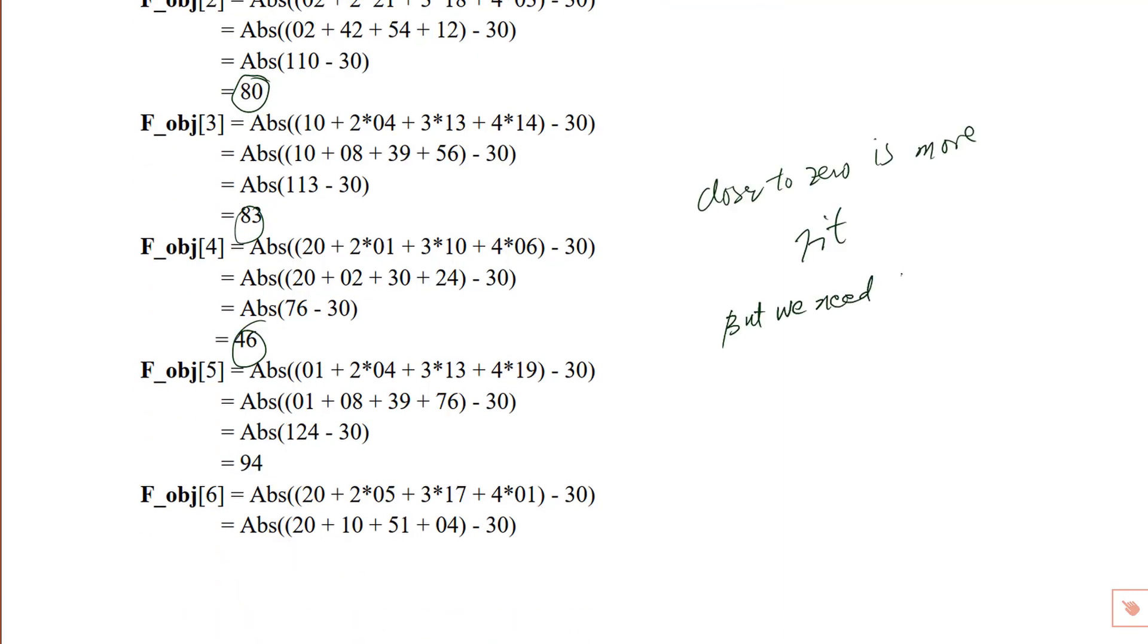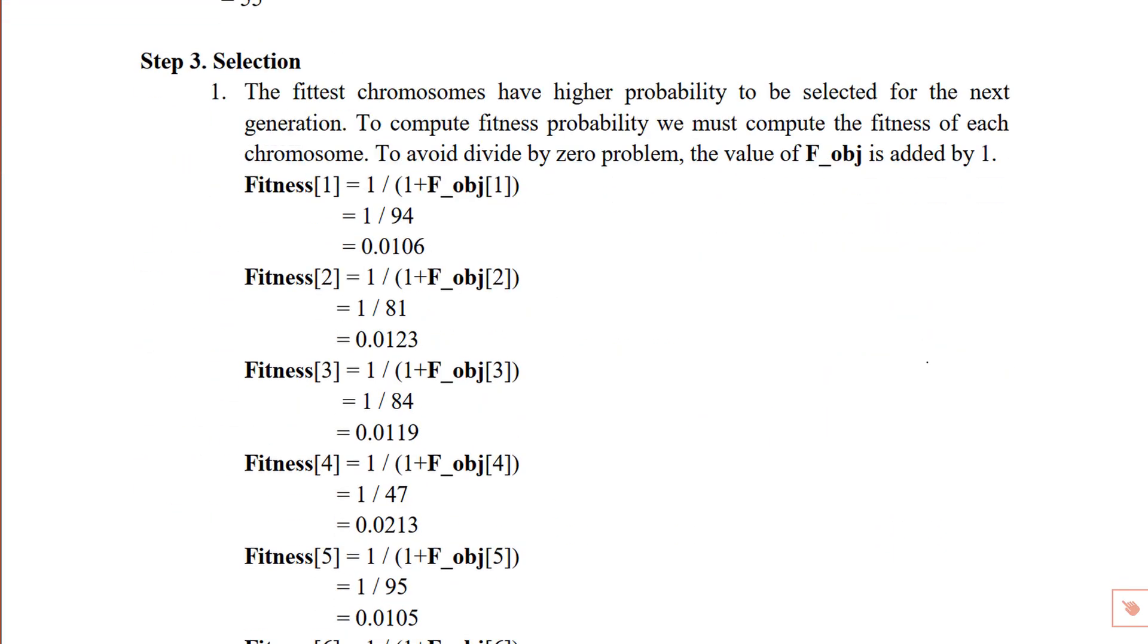For further processing, we need probabilities. So we need to convert these fitness values to probabilities, which we do by computing the fraction first - 1 divided by 1 plus the fitness values. So we add 1 in the denominator to avoid division by 0 exceptions. Here, one more important point is that computing 1 divided by fitness value means that larger values will result in smaller fractions, which will ultimately result in smaller probabilities. This is because larger values are far away from 0 and we consider values closer to 0 as more fitter.